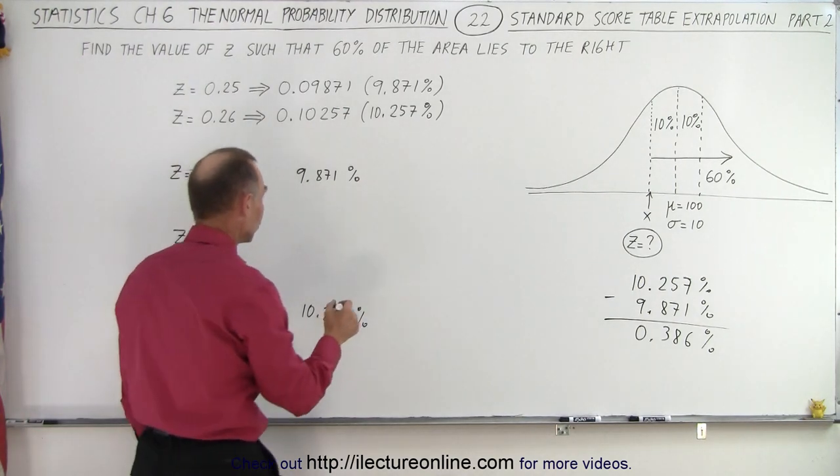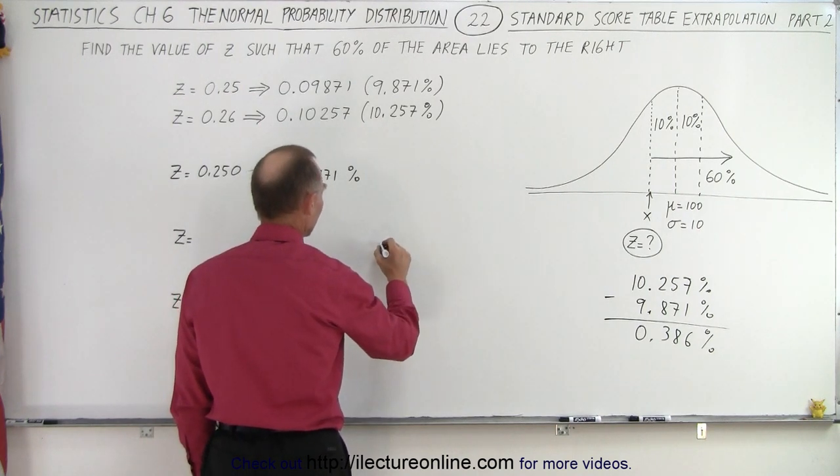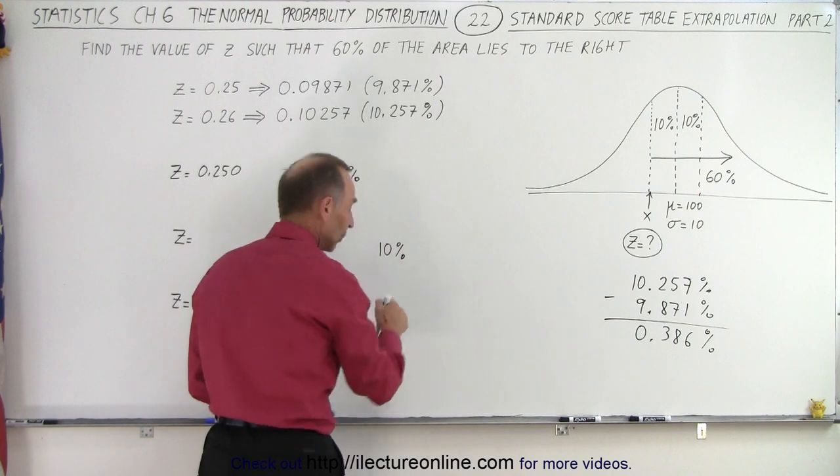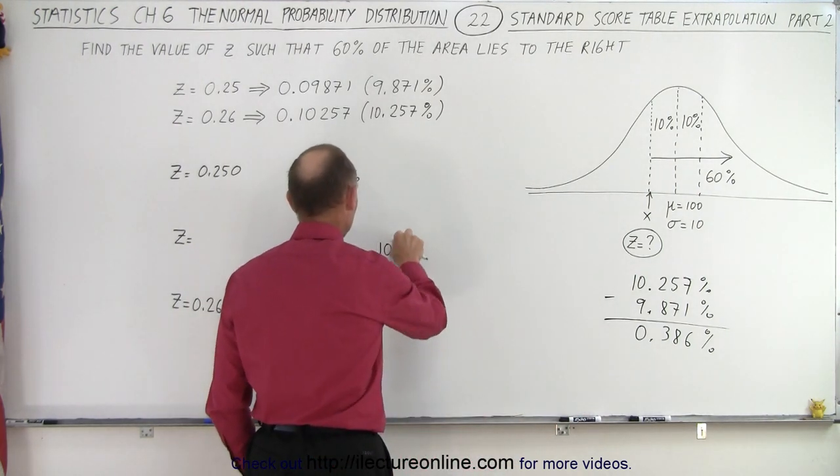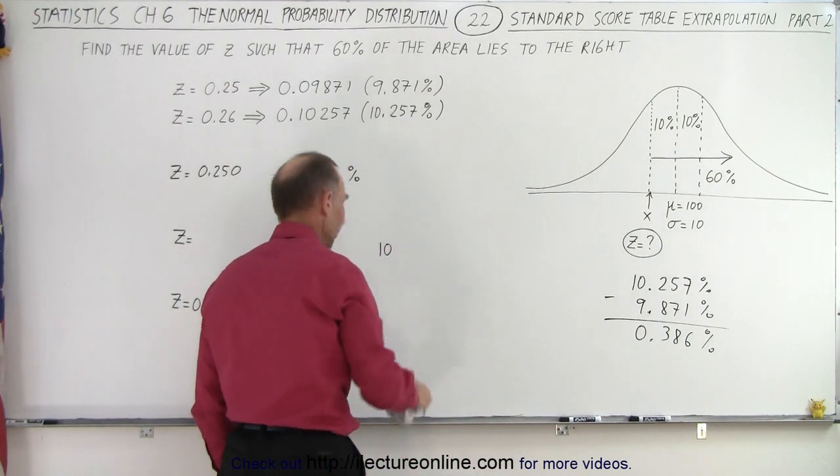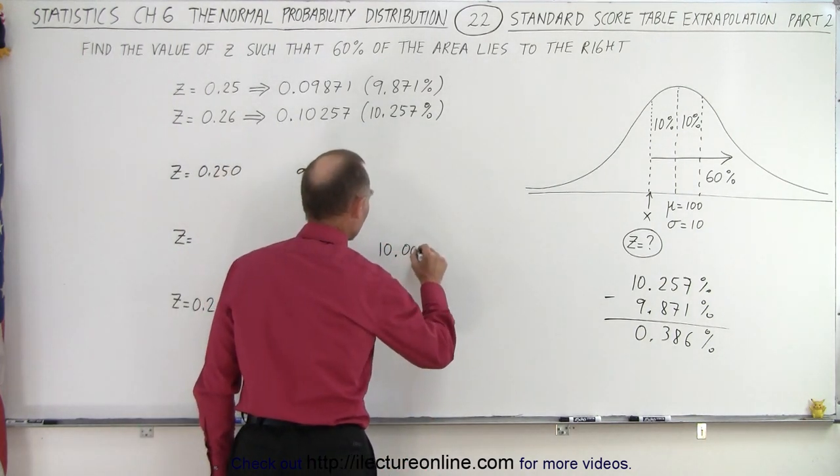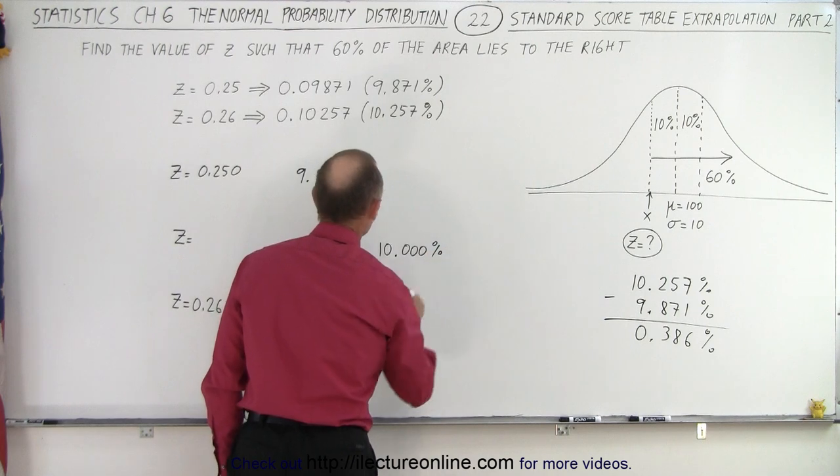Where in between? Well, we'll find out in just a moment. So where does 10% fall? And let me write it as 10% with 3 zeros so that we stay uniform here. Okay, so 10.000%, how's that?